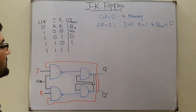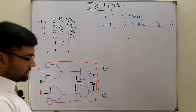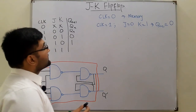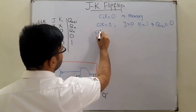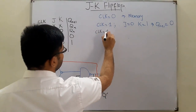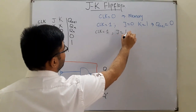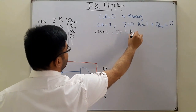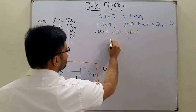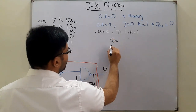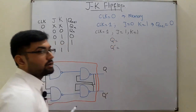I'm only taking the important case: when the clock is one, J is one, and K is one. In that case, what are the values of Q and Q-complement?